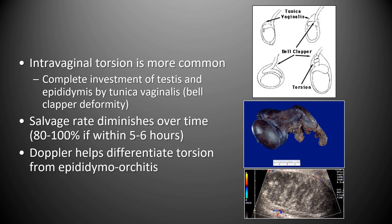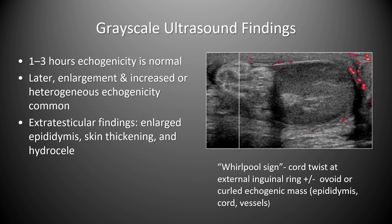Doppler ultrasound helps differentiate torsion from epididymo-orchitis. For the first 1 to 3 hours after the onset of torsion, testicular echogenicity is normal. Later, there is enlargement and increased or heterogeneous echogenicity in the testis, as seen in our index case. Extratesticular findings can also occur, including an enlarged epididymis with skin thickening and hydrocele.